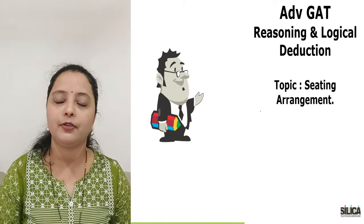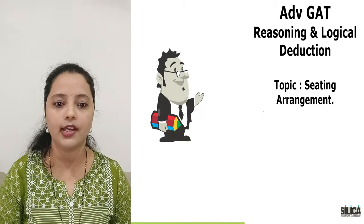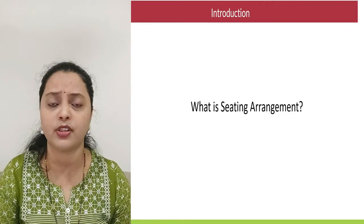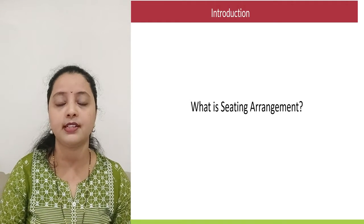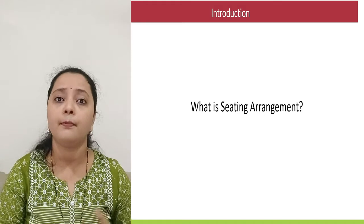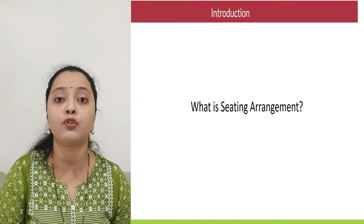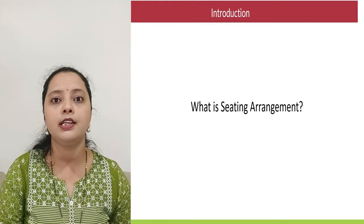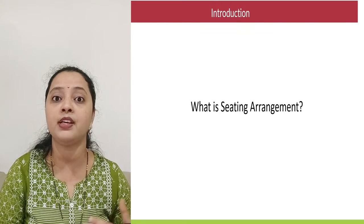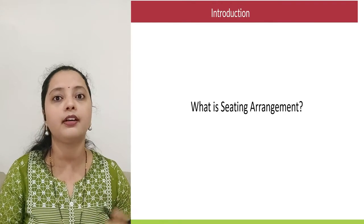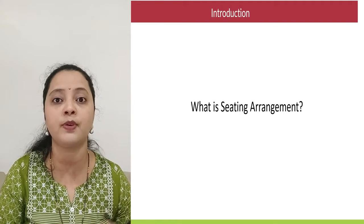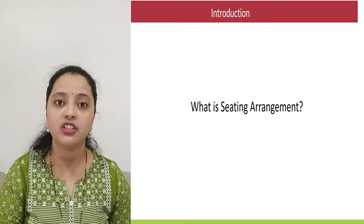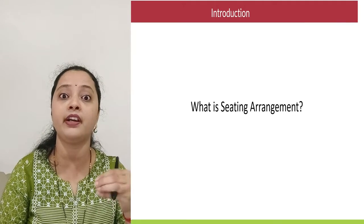Hello everyone, I am Samiksha and the topic we are discussing now is sitting arrangement. We have already come across sitting arrangement questions — we did a question of sitting arrangement in the chapter of puzzle test. But there could be other varieties as well. Sitting arrangement is basically a position-based arrangement of people. It could be linear or circular. Those are the basic two types. But in circular arrangement, people could be sitting around a hexagonal, square, or rectangle table, which is why we are doing sitting arrangement as a separate individual chapter.